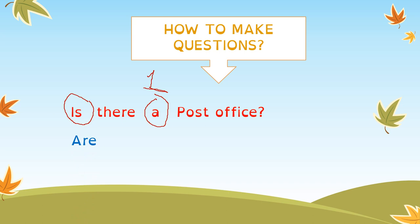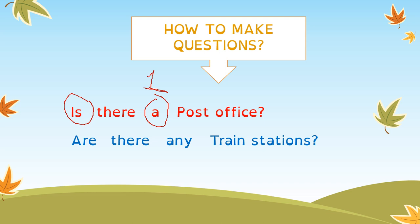What about if we talk about two or more places in the town? The question is: 'Are there any train stations?' — 'are' because it's plural, and 'any'. Don't forget to add the letter 's' at the end. Repeat after me: 'Are there any train stations?' Very good.